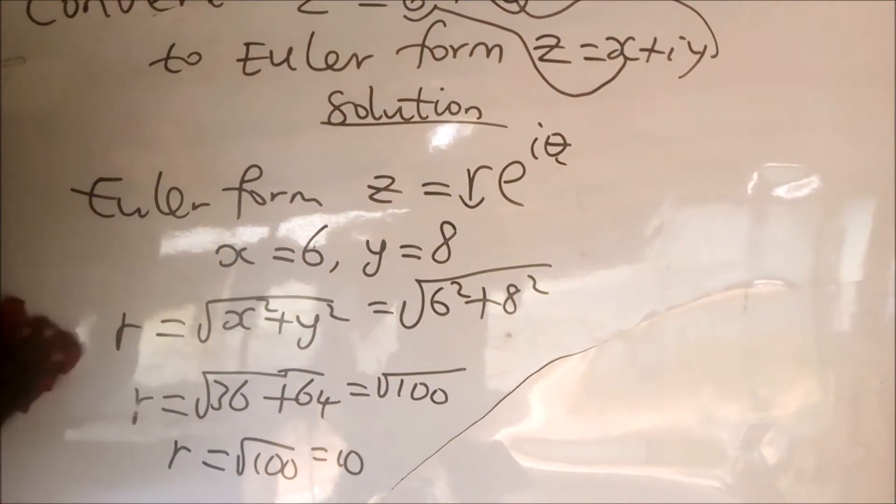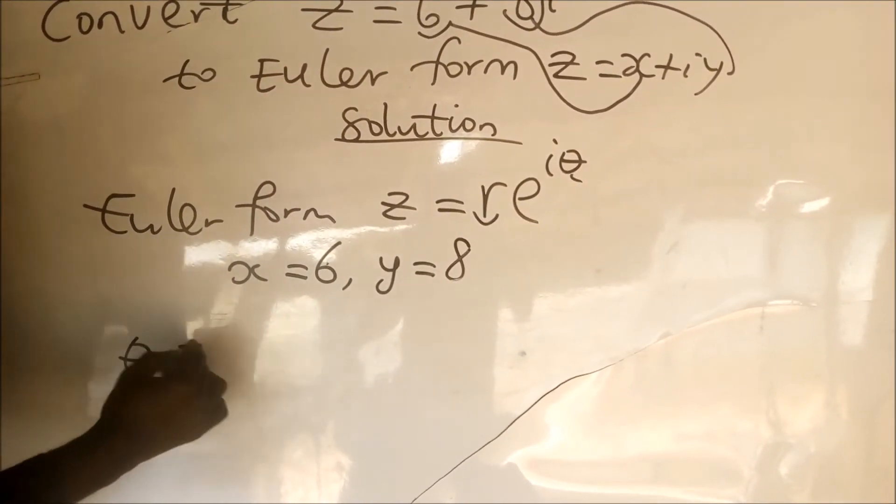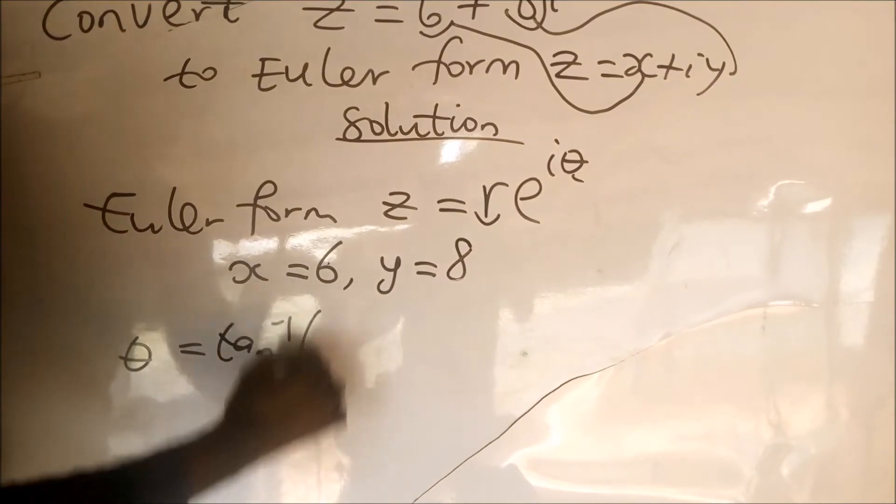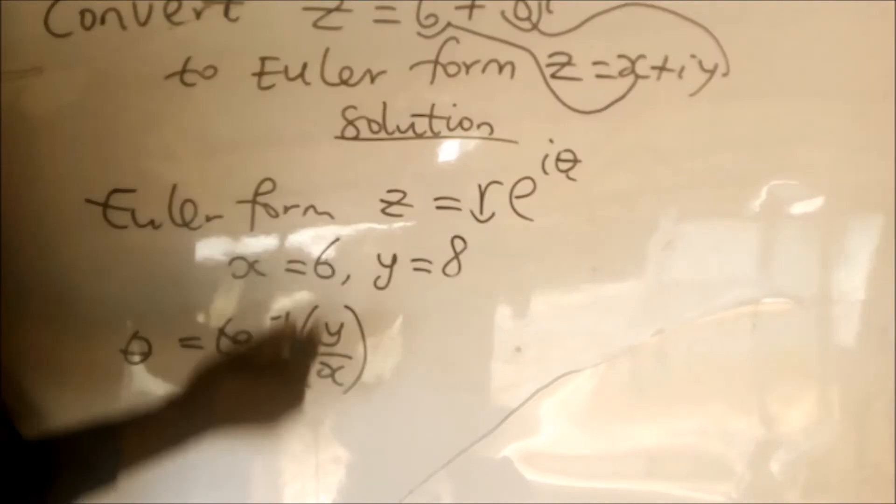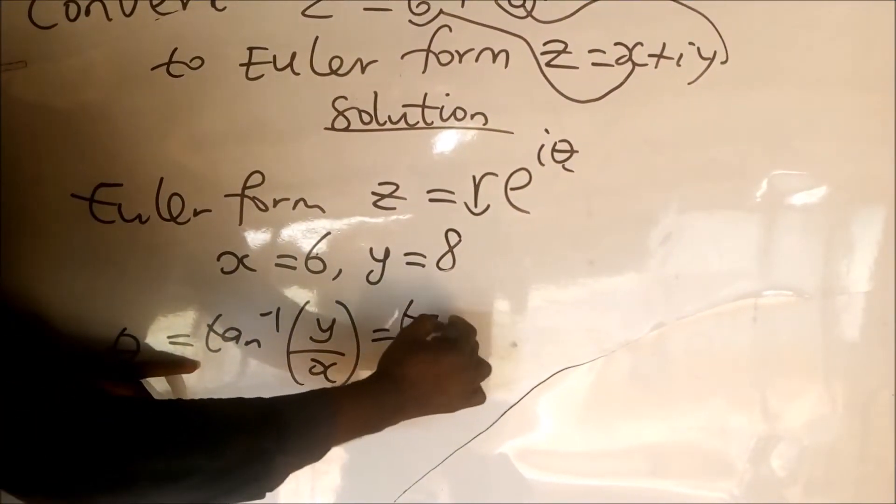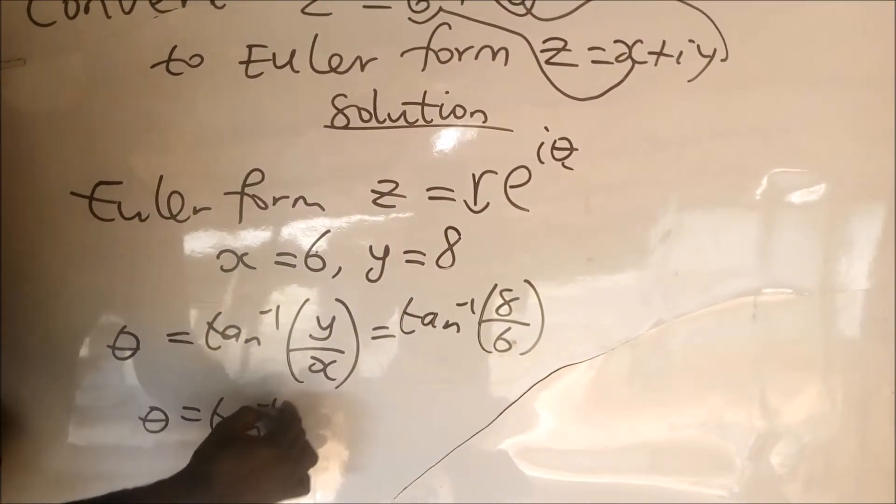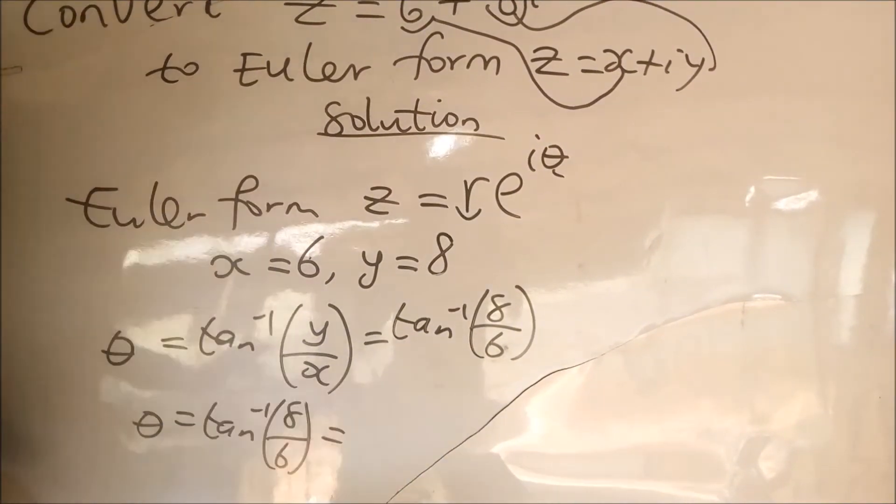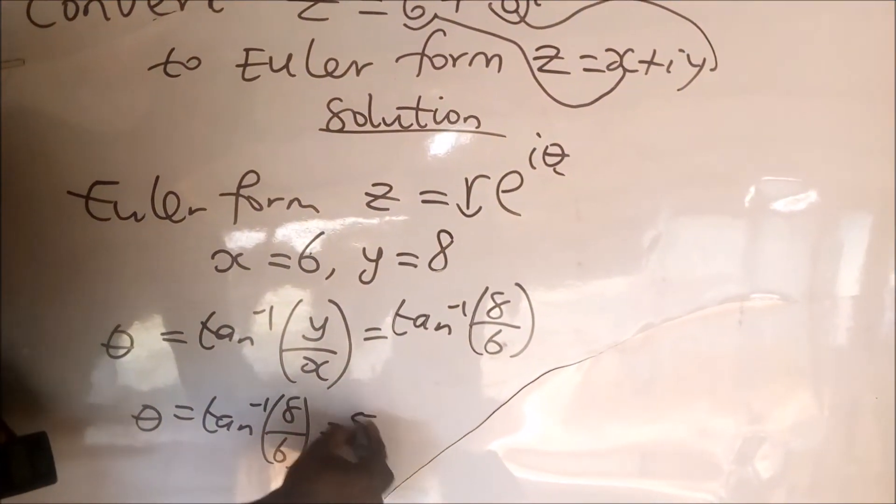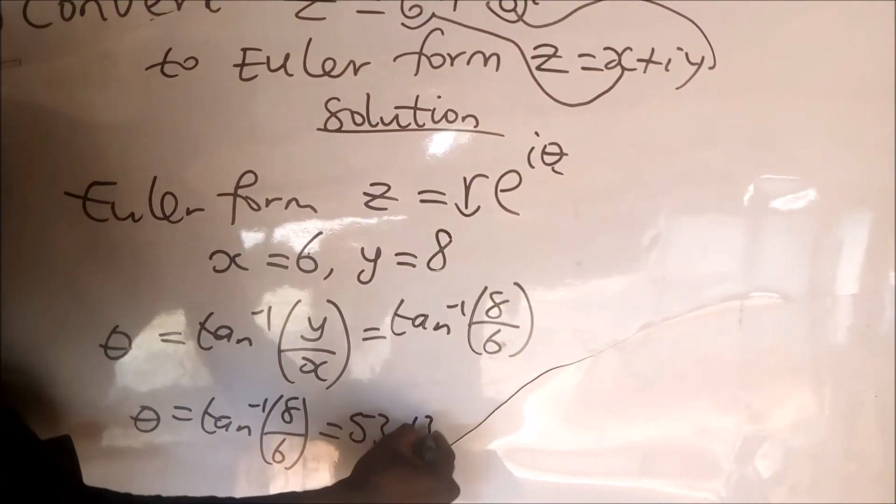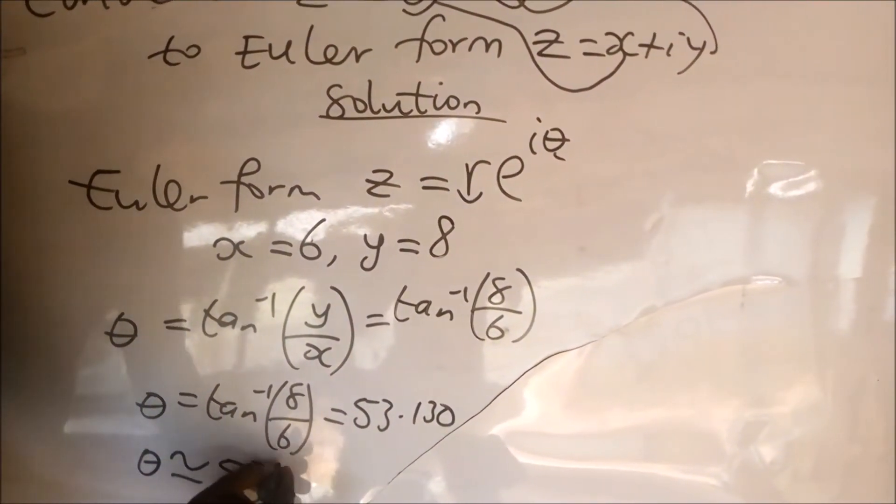For us to get the argument of this complex number, we use the formula argument equal to tan inverse of y all over x. Since our y is 8 and x is 6, we are going to say that this is tan inverse of 8 all over 6, and tan inverse of 8 over 6 is going to give us 53.130, which when we approximate to nearest whole number, we are going to get 53 degrees.